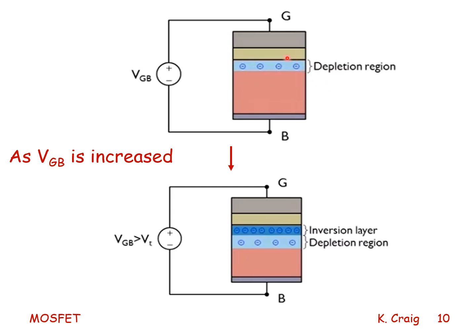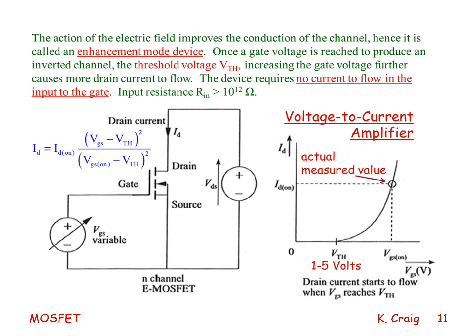In normal operation, if there's no voltage applied to the gate, what we have between the two N-type materials is a depletion region. As the gate voltage is increased above the threshold voltage, this depletion region gets larger and an inversion layer appears through which current flows. The action of the electric field improves the conduction of the channel — hence it is called an enhancement mode device.